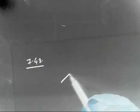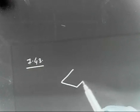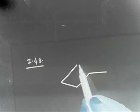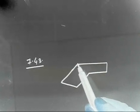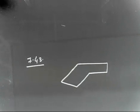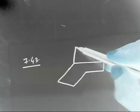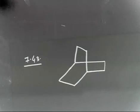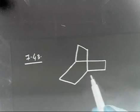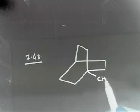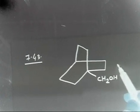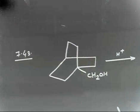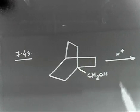So what we have: I have a 4-membered ring on this side, and on this side also I have a 4-membered ring. And then I have a bridgehead, something like this. And here I have CH2OH. If I treat this compound with H+ and some heating is also there.